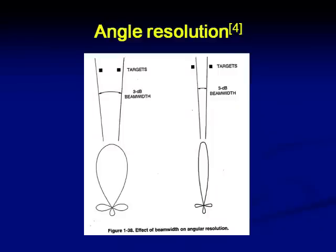If you are having a broad beam for the transmitting antenna, two targets will be sending echoes that fall within the 3 dB beam width of the antenna, and the antenna will give equal gain for both. At the receiver, you will not be able to distinguish whether the target is at one position or another — you will feel there is only one target. But if you choose the beam width to be very narrow, you can identify one target, then a blank, and then another target when the next beam is placed on it. So choosing the beam width of the antennas is very crucial in the angle resolution aspect.